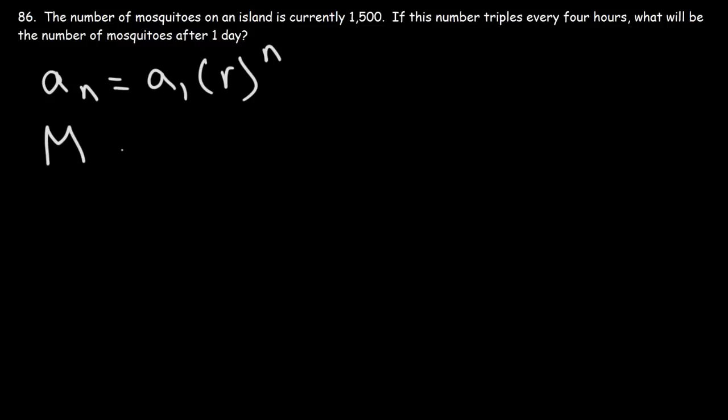So we're going to replace a_n with M, which represents the number of mosquitoes. The initial amount, or a_1, is 1,500. Now the growth rate—we can see that the number of mosquitoes triples, so the growth rate is going to be three.